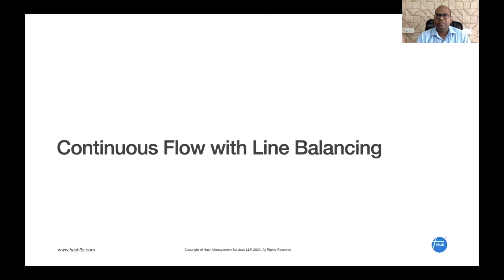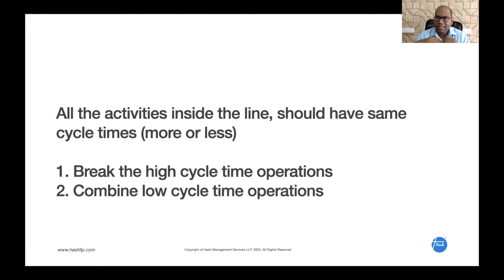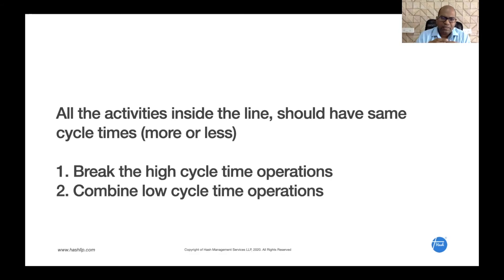To reduce these wastes, we can follow continuous flow with line balancing. Most assembly lines are built for continuous flow but they don't follow it — they use a bundle system instead. Line balancing means making sure all activities inside the line have more or less the same cycle times. Where there is a high cycle time operation, we need to break it into two activities or assign two people, or combine two low cycle time operations.